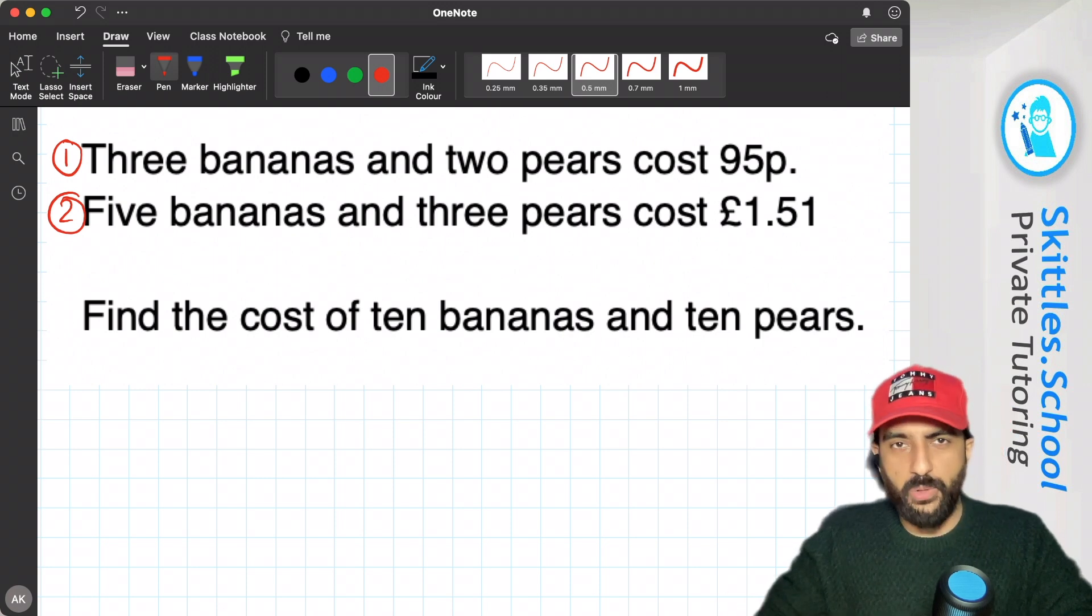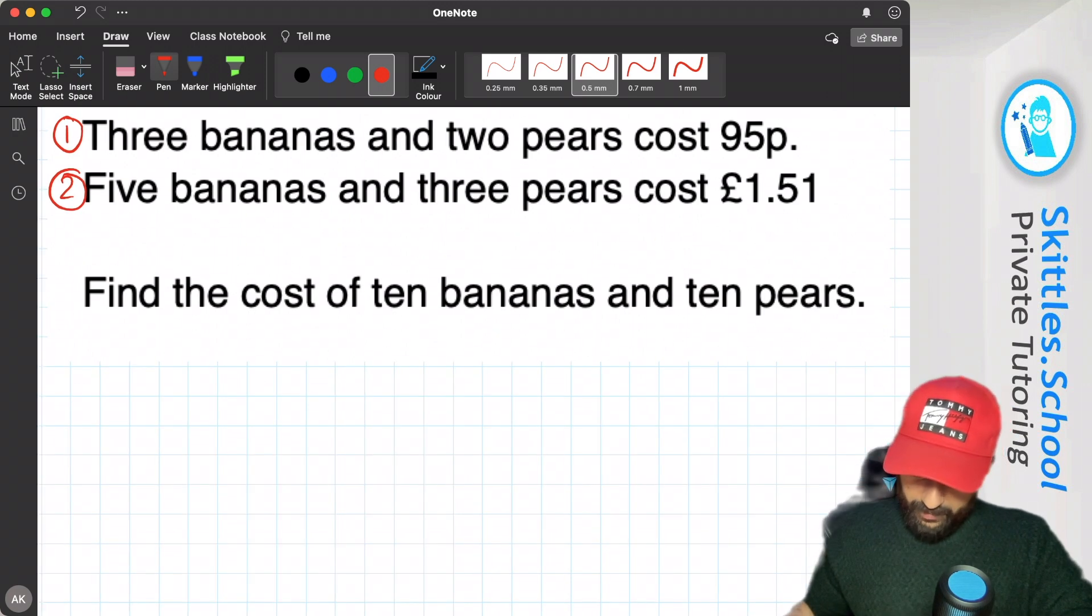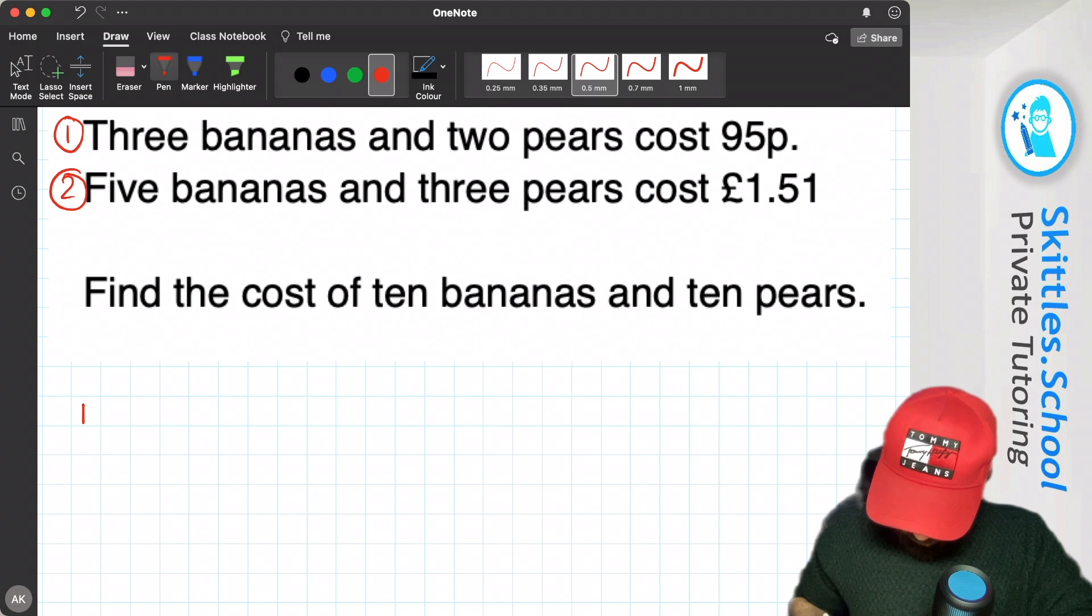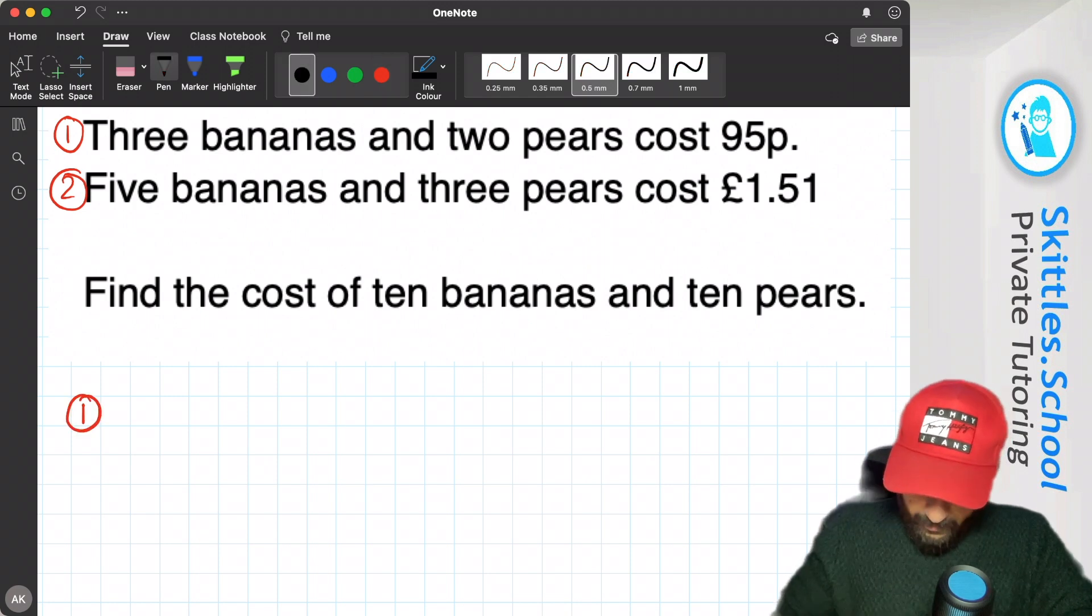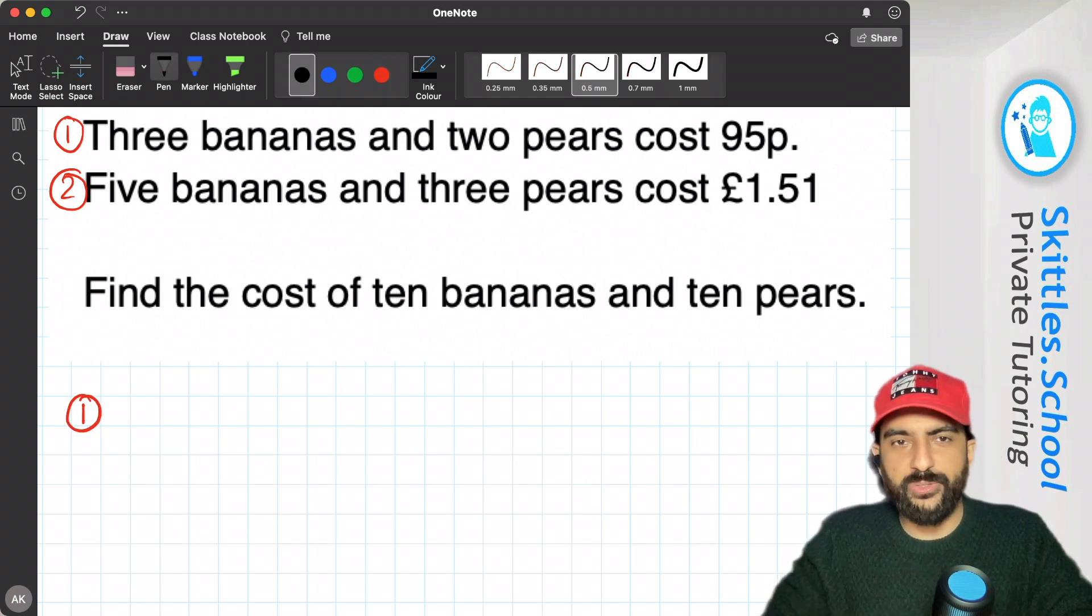This looks like equation 1 and this one looks like equation 2. So let's convert those into numbers. 3 bananas. Let's start with the first one. 3 bananas and 2 pears cost 95 pence.